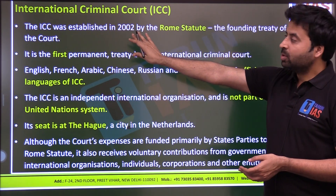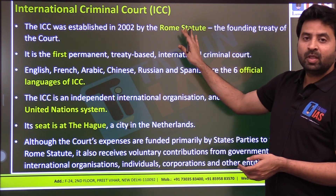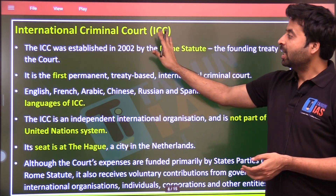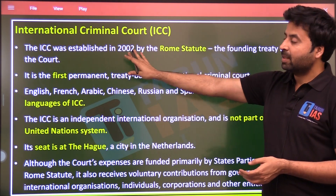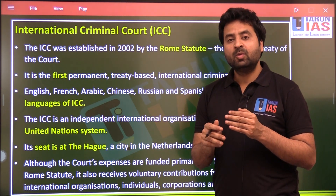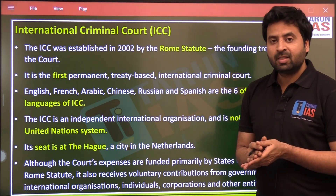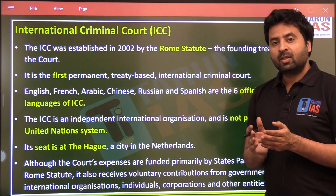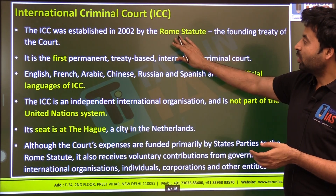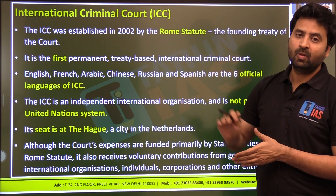The International Criminal Court was established in 2002 under a treaty named the Rome Statute. The Rome Statute is the founding treaty of the International Criminal Court. You should link different treaties — for example, just as the Geneva Convention is related to its topic, the Rome Statute is associated with the International Criminal Court as its founding treaty.